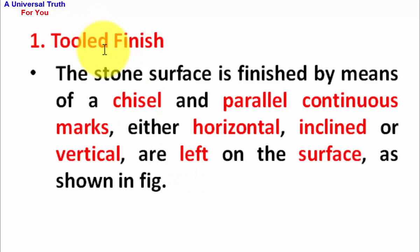Number 1, Tooled Finish. In it, the stone surface is finished by means of a chisel and parallel continuous marks, either horizontal, inclined or vertical, are left on the surface as shown in figure.